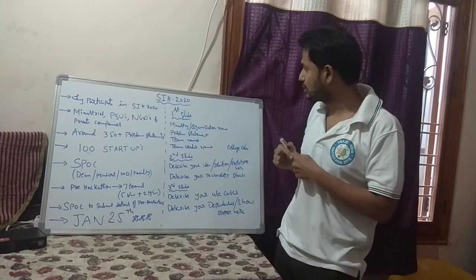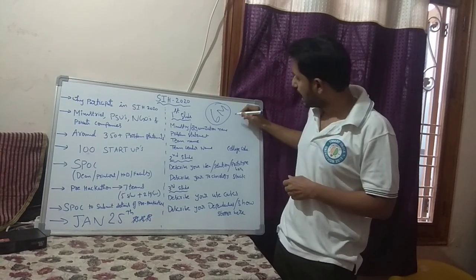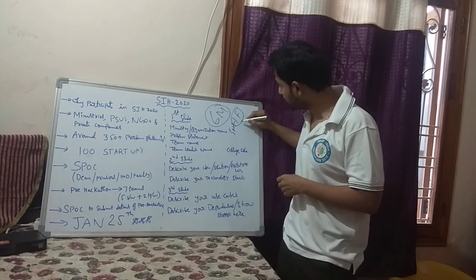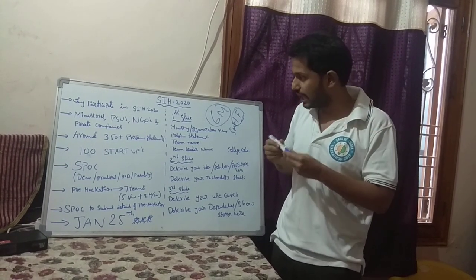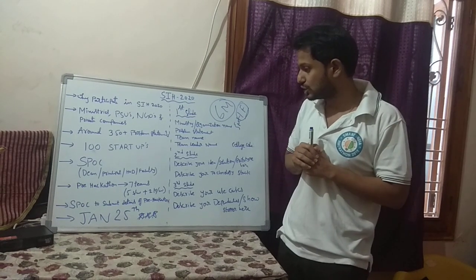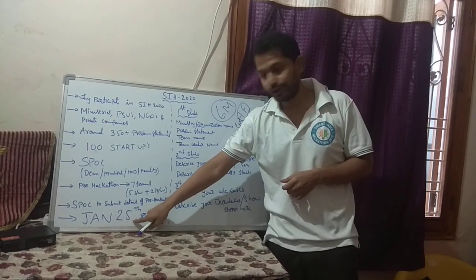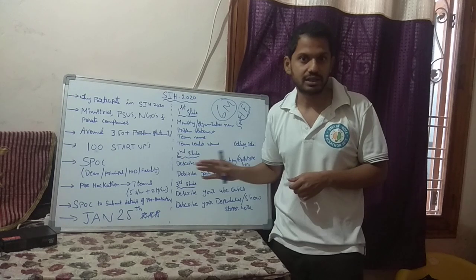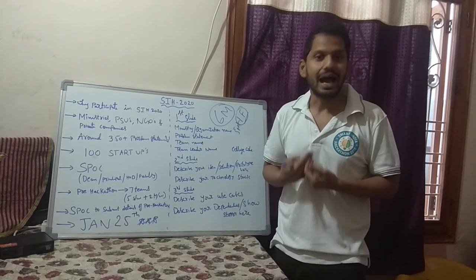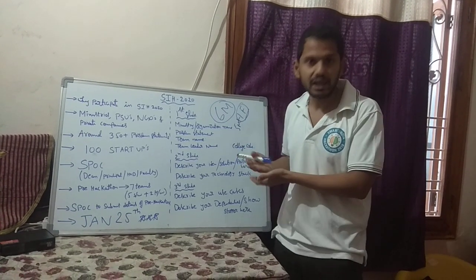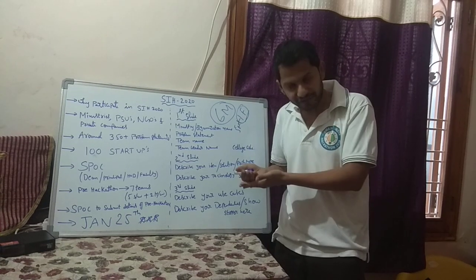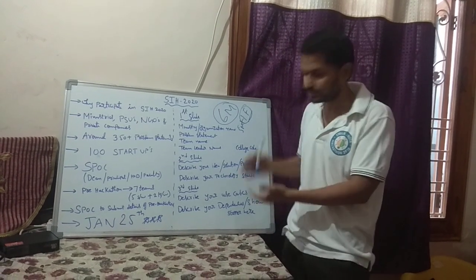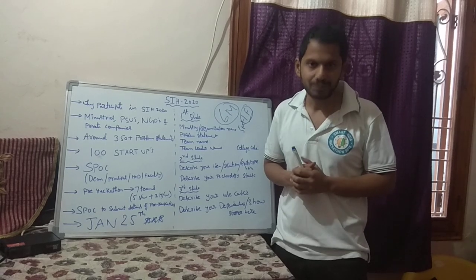Regarding the team: six members should be there, and one female candidate is compulsory — five male and one female. Remember January 25th — they are not going to extend it. The internal hackathon has to happen and it is the SPOC's responsibility to upload the student details. If you have any doubts, comment in the comment section. You can also go to the SIH portal, check the FAQs, or use the grievance section. If you have doubts about writing the proposal, comment and I can help. Thank you very much.